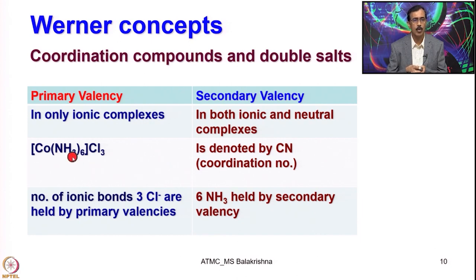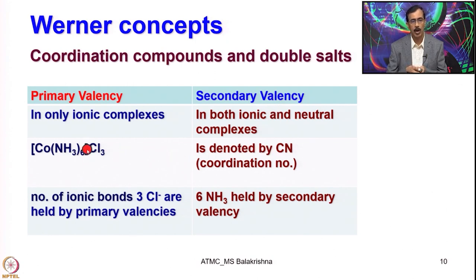For example, if you consider hexamine cobalt chloride, the ammonia inside is denoted by coordination number. If it is 6, the secondary valency is 6 or coordination number is 6. Whatever is outside the bracket as counter-anions is considered as primary valency. The number of ionic bonds — 3 Cl⁻ — are held by primary valency, meaning they are involved in ionic bonding with cobalt.